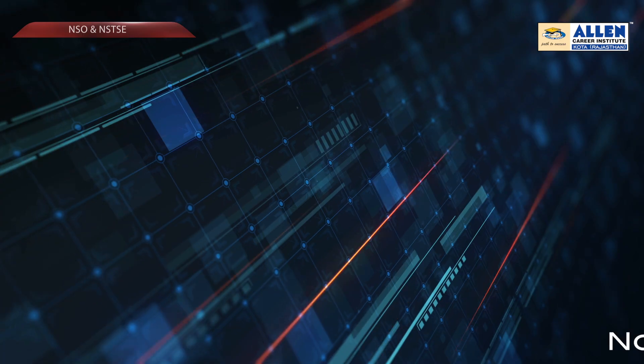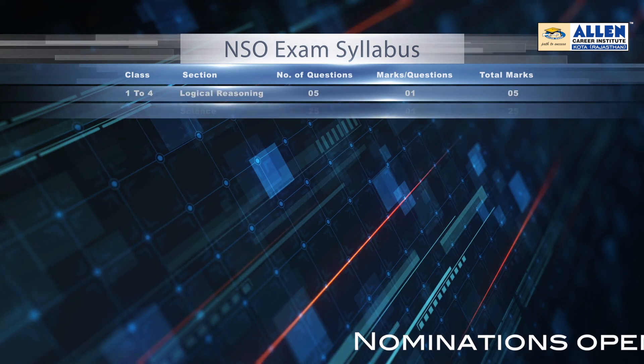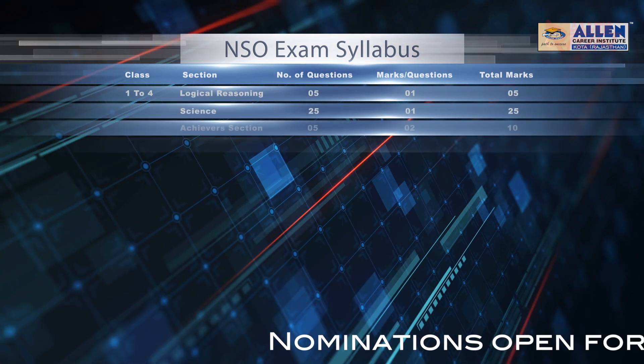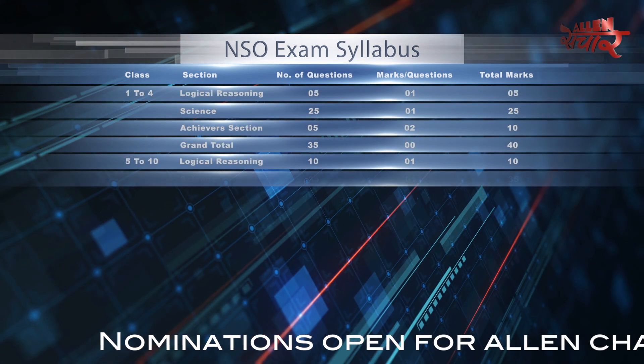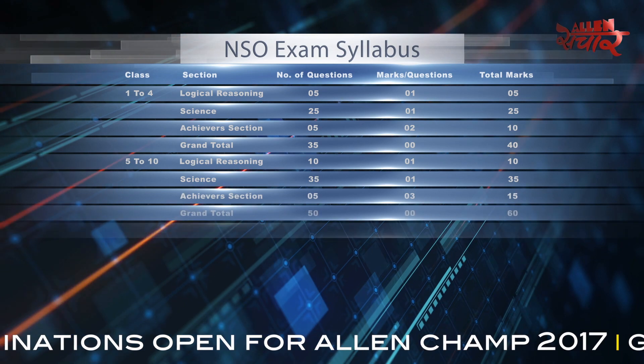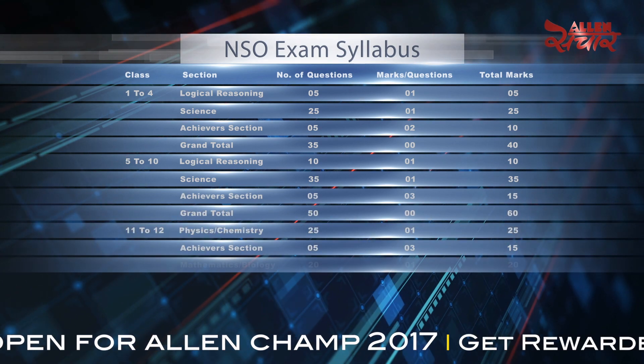Now let's talk about the exam pattern for NSO. There are three sections for each class. For class 1st to 10th, logical reasoning, science, and achievers sections are there. For class 11th and 12th, physics, chemistry, achievers section, and maths or biology sections are there.